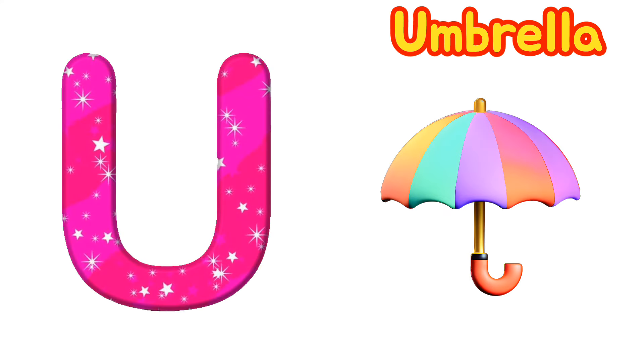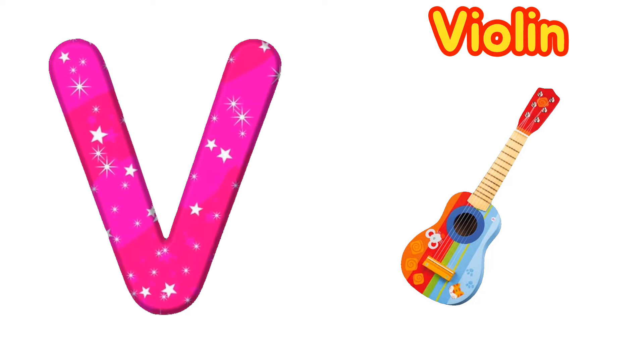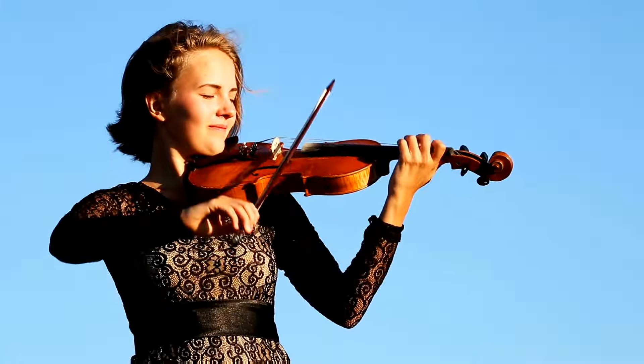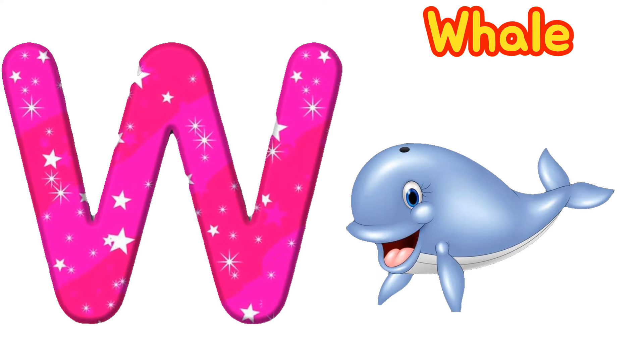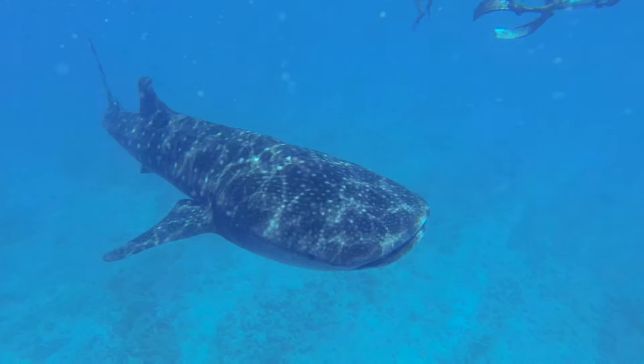U is for Umbrella. U-Umbrella. V is for Violin. V-V-Violin. W is for Whale. W-W-Whale. W-Whale.